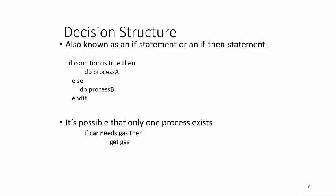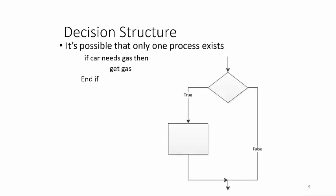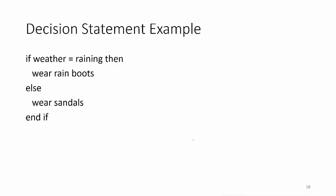Sometimes you only need to do one process. If the car needs gas, then get gas, and there's nothing on the else part. This is what that flowchart would look. The else part, no instructions are being executed. So you're only doing something if it's true, if the condition is true. If weather equals raining, then wear boots, else wear sandals.